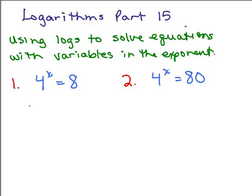As a reminder, we can write 4 as 2 squared and that's to the x power, and 8 is 2 cubed. That gives you 2 to the 2x equals 2 cubed, because remember we multiply these exponents, 2 times x.